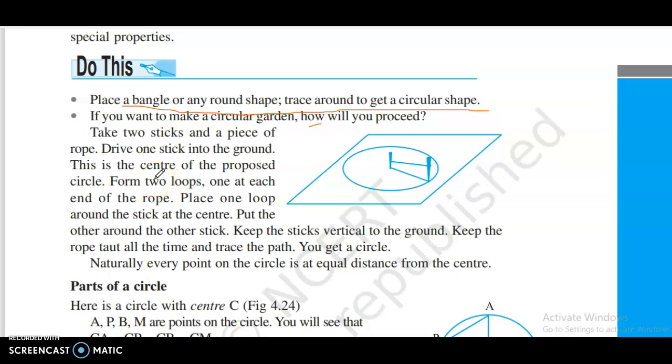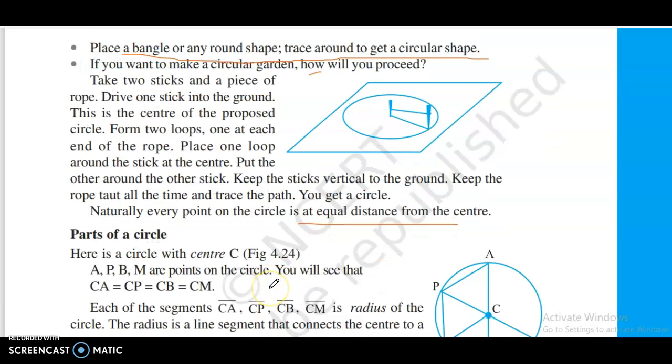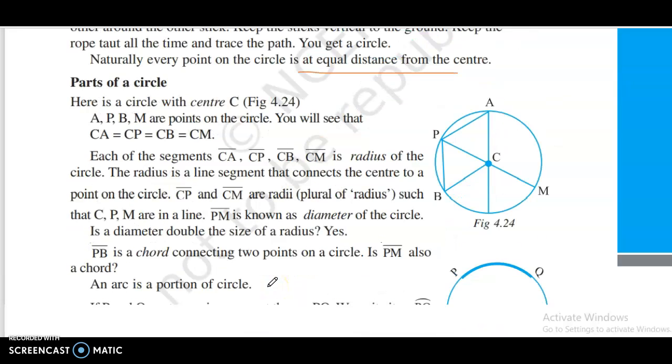Make two loops, one at each end of the rope. Place one loop around the stick fixed to the ground to keep the rope taut. Trace the path. You get a circle. Naturally, every point on the circle is at equal distance from the center.